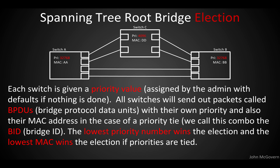The lowest priority wins the election, and the other switches respect that switch as the root. Every switch when it boots up wants to think it's the root until it loses the election. If there's a tie in priority values — which you generally don't want — the lowest MAC address wins. In our example, switch C has the lowest priority. Even if all three priorities were 32,768, the device with the lowest MAC address would become the root bridge.